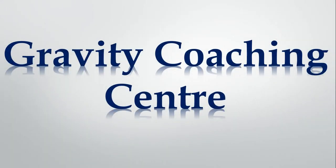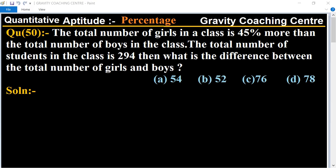Welcome to our channel Gravity Coaching Center, Quantitative Aptitude chapter Percentage, question number 50. The total number of girls in a class is 45% more than the total number of boys in the class, and the total number of students in the class is 294. Then what is the difference between the total number of girls and boys?